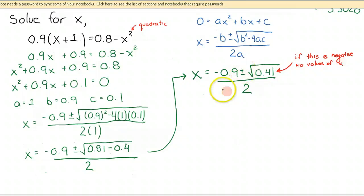So now, once I get to this point, I'm going to break off and figure out x sub 1, which is going to be negative 0.9 plus the square root of 0.41 over 2. And I'm going to figure out x sub 2, which is negative 0.9 minus the square root of 0.41 all over 2.